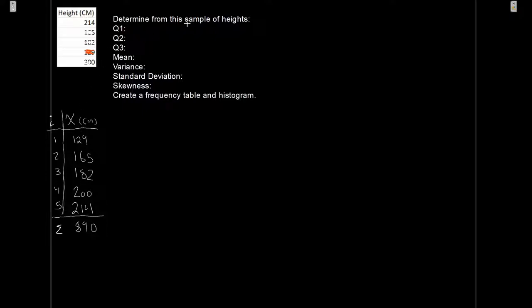We have a sample of heights. So that means for my mean, I want to calculate x bar. x bar is going to be the sum of my x's, so that's going to be 890 divided by 5. And so 890 divided by 5, that's going to give me a mean of 178 centimeters.